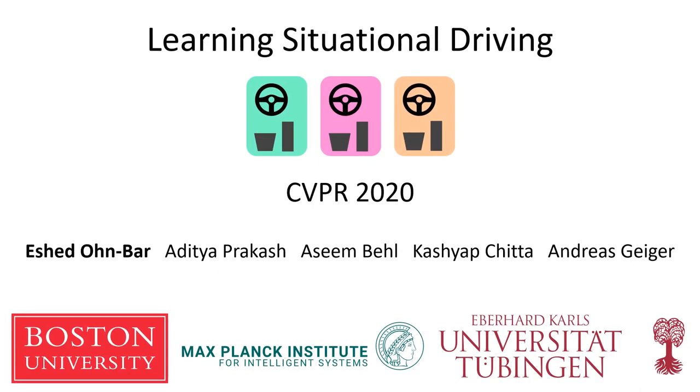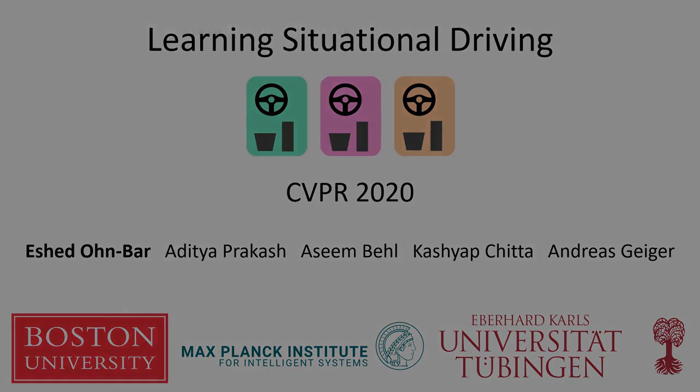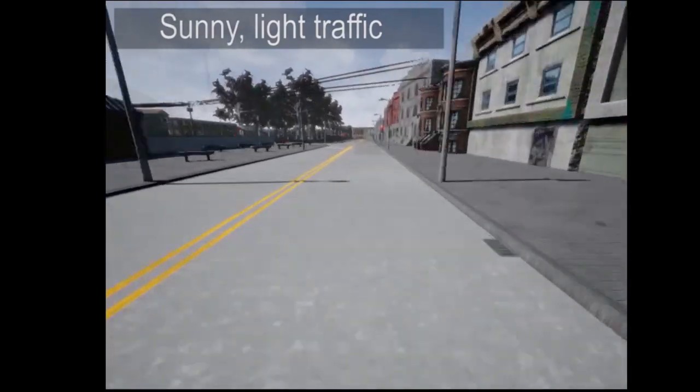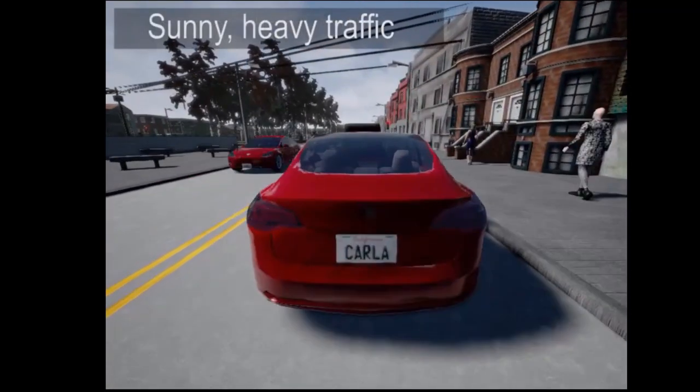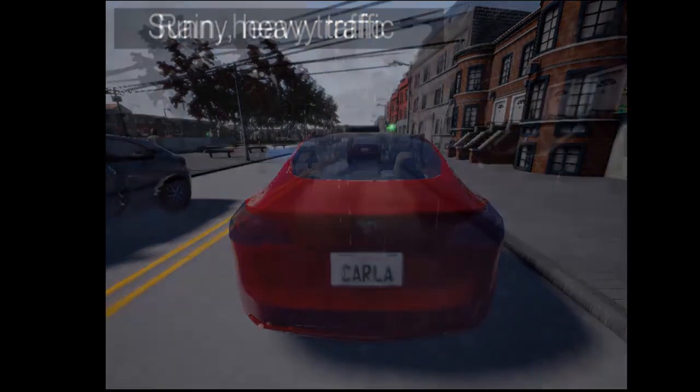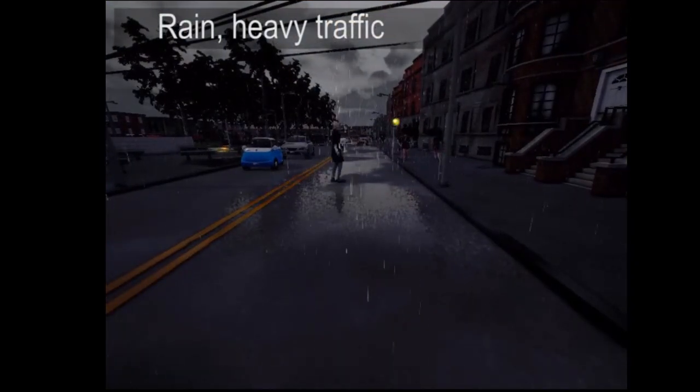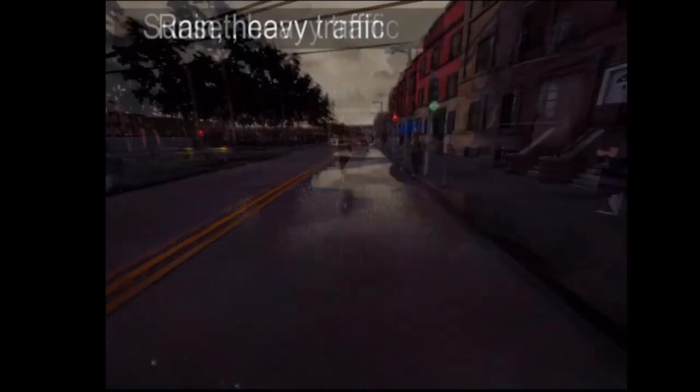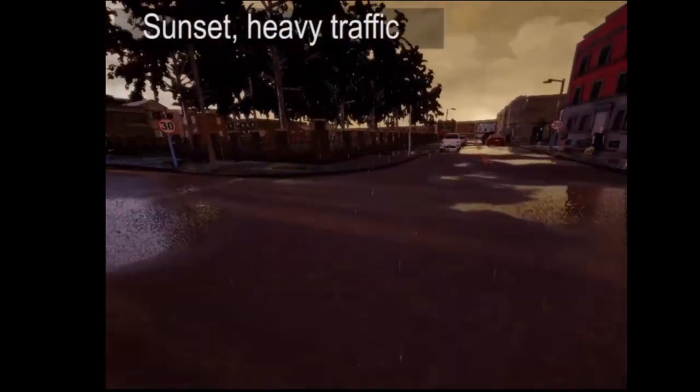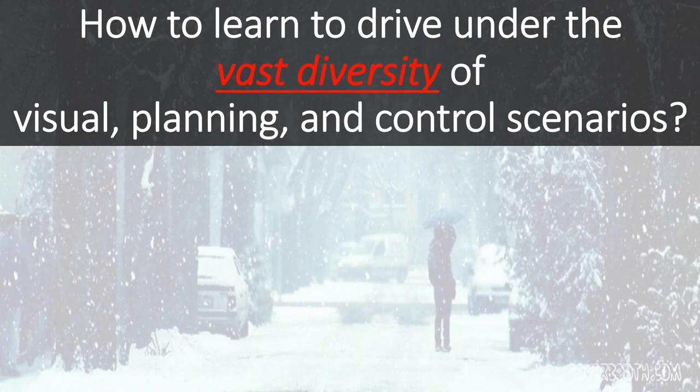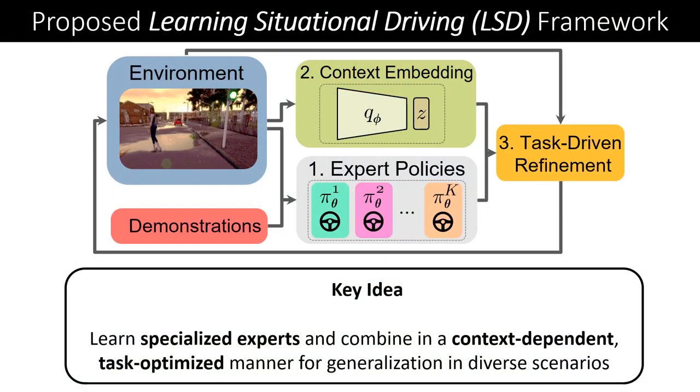Hi, my name is Eshed Onbar and I'm happy to share with you our work learning situational driving. From driving in empty roads on a sunny day to turning in a busy intersection while yielding to pedestrians in heavy rain, human drivers have a remarkable ability to drive in diverse visual conditions and situations. In this work, our goal is to design an algorithm with a similar ability to operate under the vast diversity of all possible visual, planning and control scenarios.